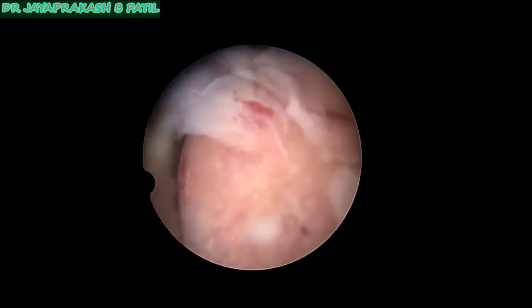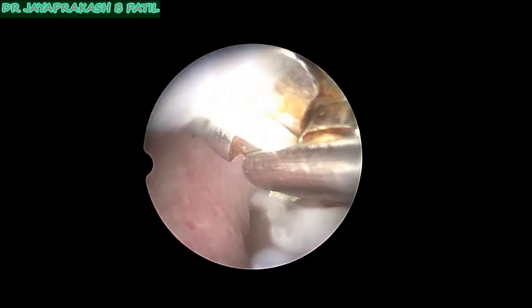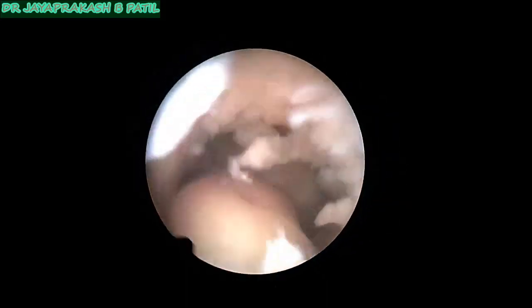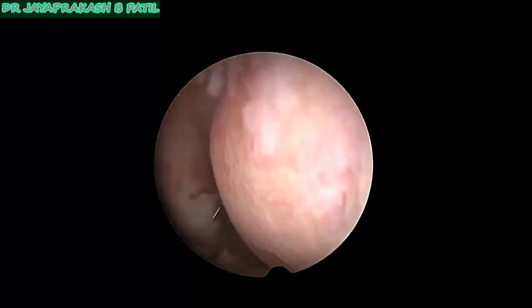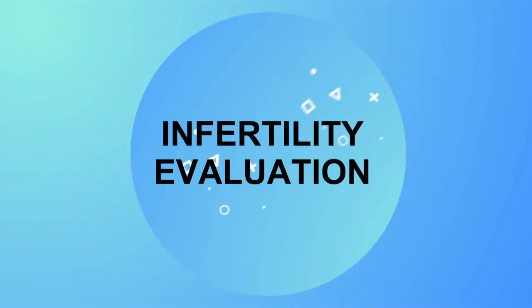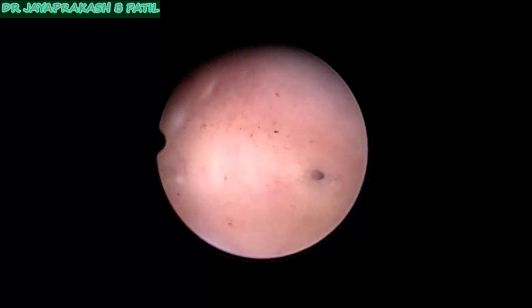Patients with polyps previously used to undergo repeated DNCs or would eventually end up with hysterectomy for menorrhagia. Whereas now with office hysteroscopy you can remove the polyp and relief is quick and everlasting.